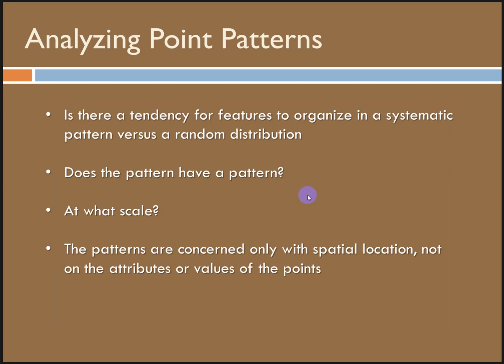When we analyze spatial patterns, we're looking to answer some basic questions like, are features organized in some kind of systematic pattern, or are they randomly distributed? Is there a pattern to the pattern? Does the pattern have a pattern? Is there a scale at which the pattern emerges or becomes meaningful? At the simplest level of analysis, we're only concerned about the physical pattern in the spatial location, not whether there's a correlation between the location and some attribute or value associated with that location.